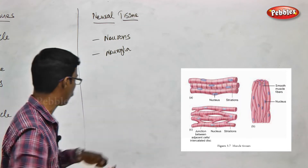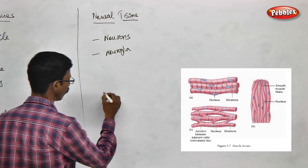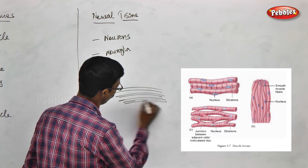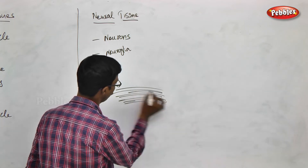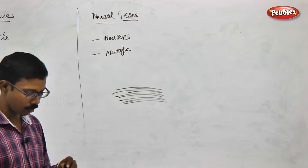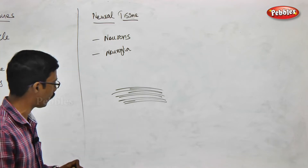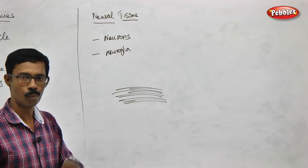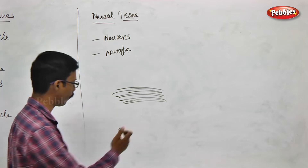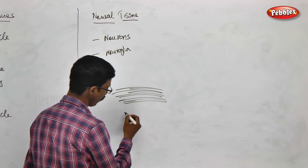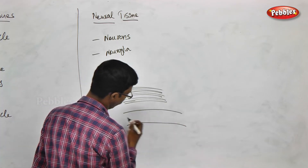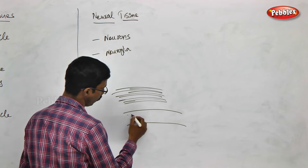There are many layers of collagen fibers. Muscle cells are actually a multi-nucleated structure. One skeletal muscle cell has one connective tissue layer enclosing it.